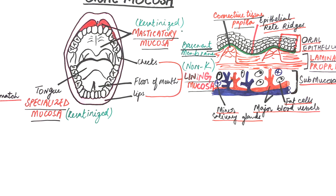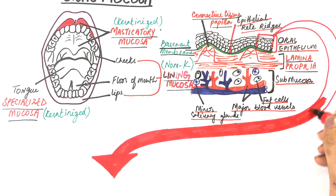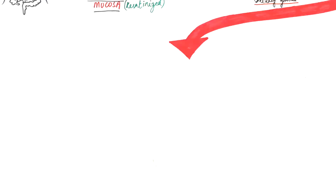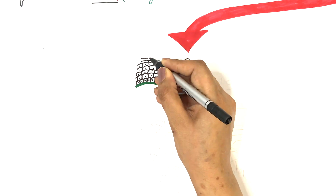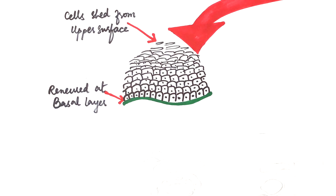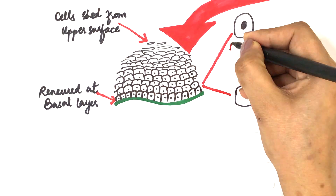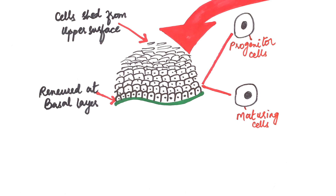The superficial layer, which is the stratified squamous epithelium, comprises different strata or layers of closely packed epithelial cells. The oral epithelium maintains its integrity through a continuous renewal process. Cells of oral epithelium are continuously shed from the upper surface and are renewed at the lowermost layer, or the basal layer. The basal cells undergo maturation and are transferred to the uppermost layer where they replace the cells that are shed. Based on this renewal process, cells of oral epithelium are divided into two categories: progenitor cells and maturing cells.